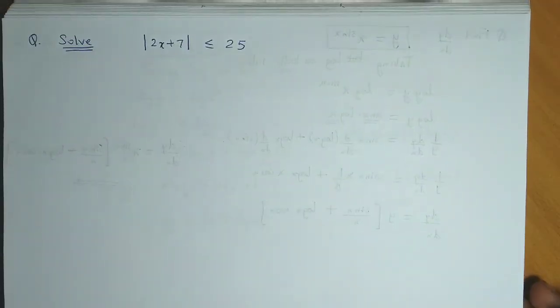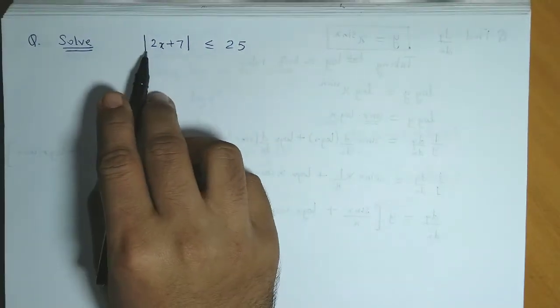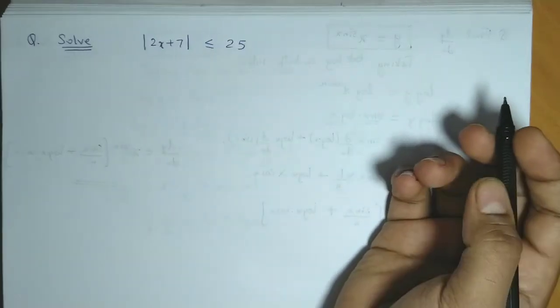We now solve a few examples related to linear inequalities. The question given here is mod of 2x plus 7 is less than or equal to 25.